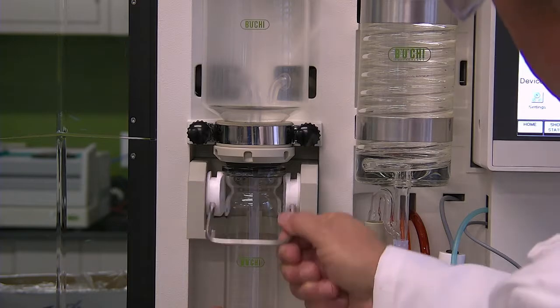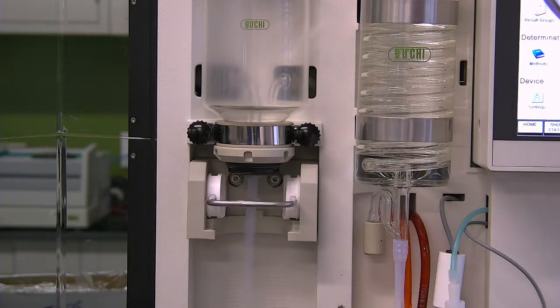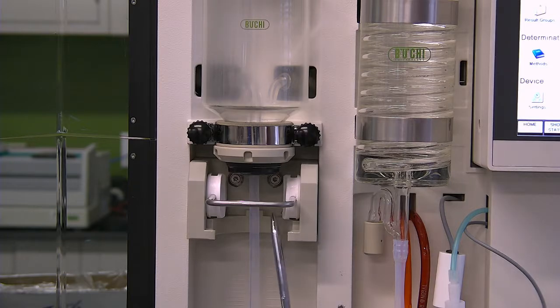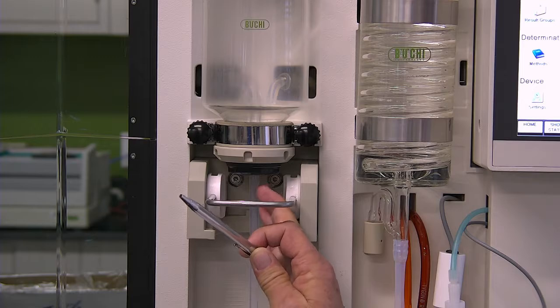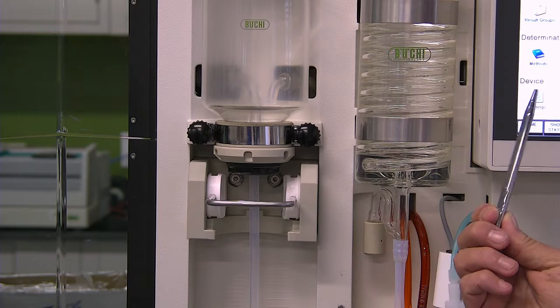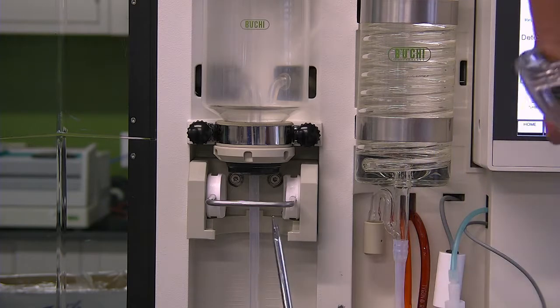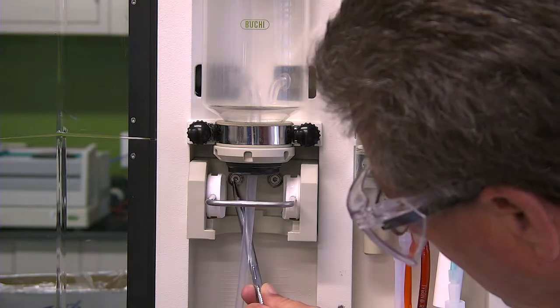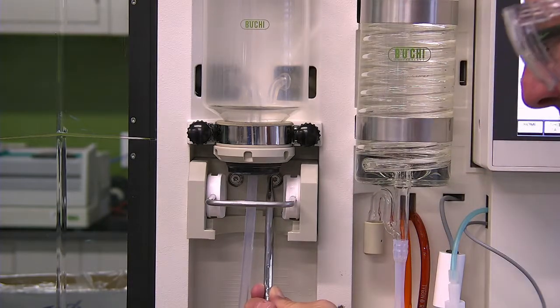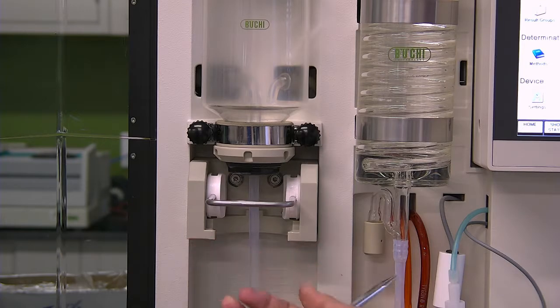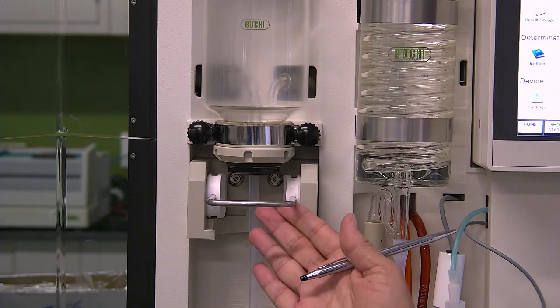If you have a sample tube on your system and you get a no sample present or no sample tube present error, what you need to do is loosen these two screws and run this up just a little bit so that it is tighter to the system.